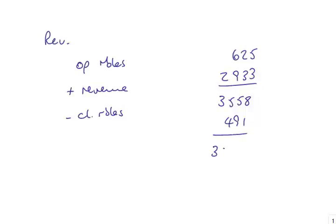But even that's wrong, because in note 1 it tells us that there's a bad debt been written off. One of the opening receivables — one of these people has not paid us 17. We have to write them off as a bad debt, so we need to take another 17 off. The 3,050 is the cash we've actually received in the year.